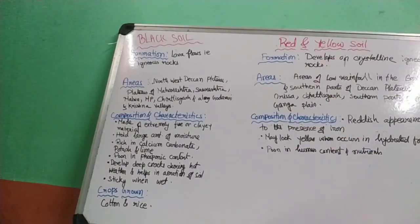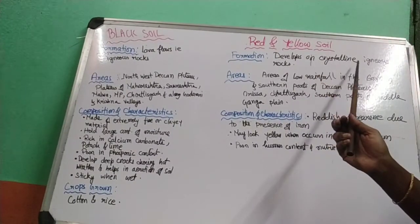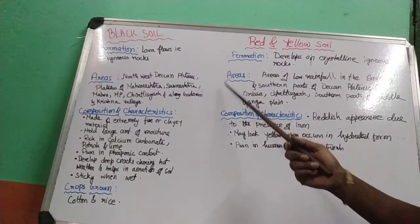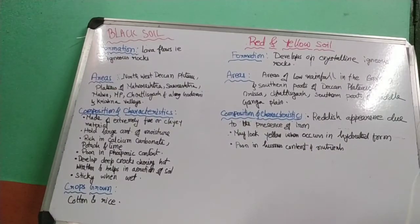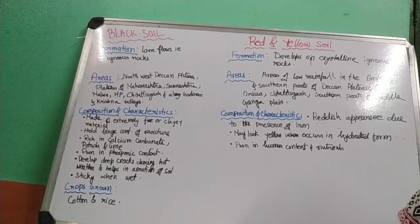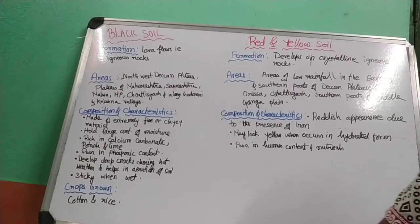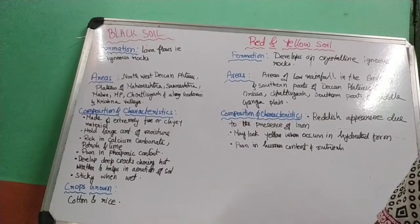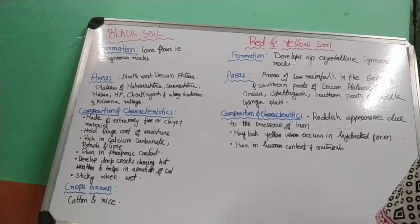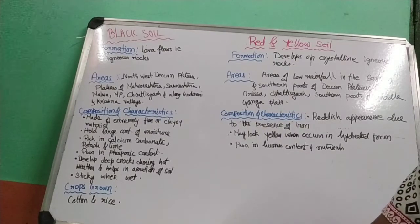Red and yellow soil is formed on crystalline igneous rocks. It has a reddish appearance due to the presence of iron. It may look yellow when it occurs in hydrated form — that is, when the soil is wet. It is very poor in humus content and nutrients. Although not mentioned in the textbook, crops like bajra, ragi, wheat, and sometimes rice can be grown in this soil.